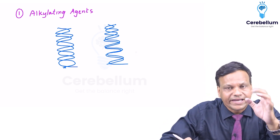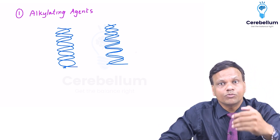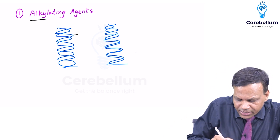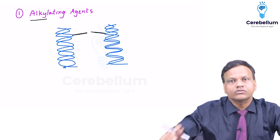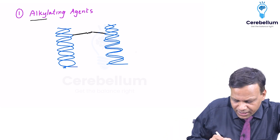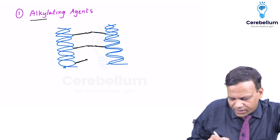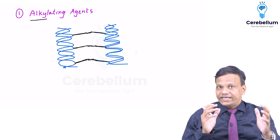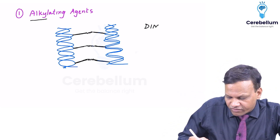When we give an alkylating agent, it attaches an alkyl group to DNA — at multiple sites on different DNA strands. These two alkyl groups then join together. So what happens when we give alkylating agents is that two DNAs unite with each other, resulting in the formation of dimers.